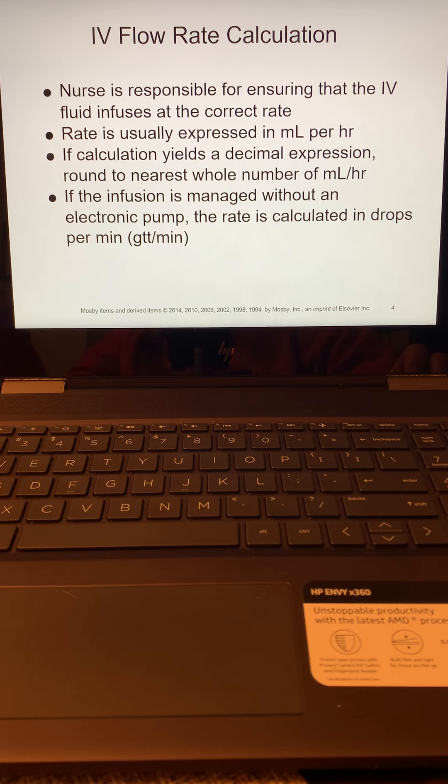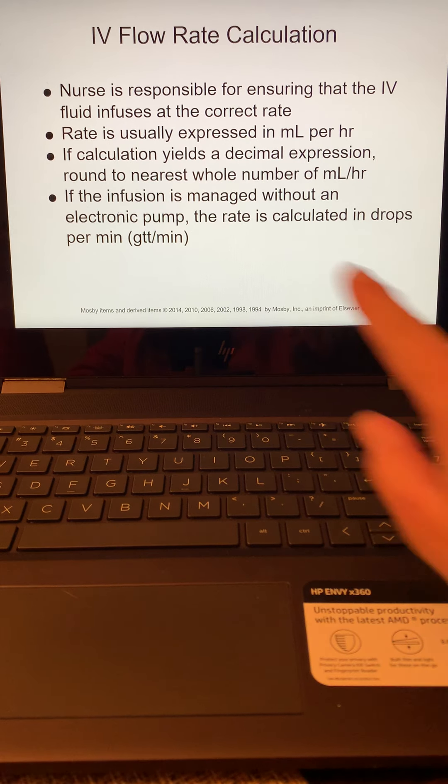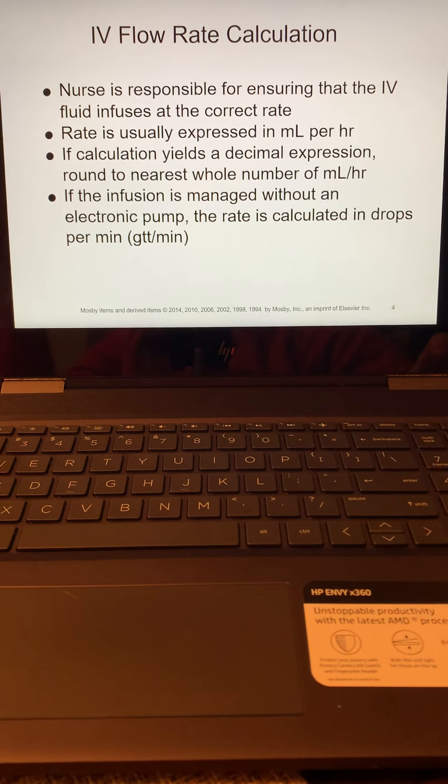The nurse is responsible for ensuring that the IV fluid infuses at the correct rate. Remember we talked earlier in the semester that the rate is expressed in milliliters per hour. So anytime we're setting a pump, it's got to be set in milliliters per hour. If we are not able to use a pump, then we will calculate it in drops per minute, GTT per minute. If we don't have a pump available, then we calculate in drops per minute and that's what we're going to focus on today.